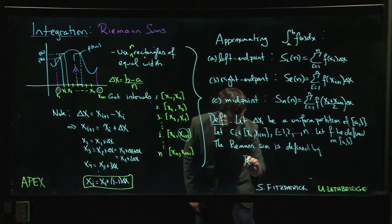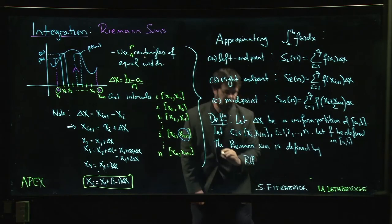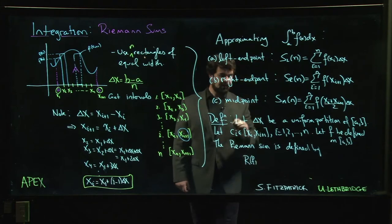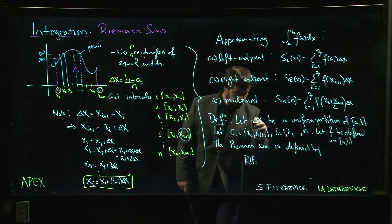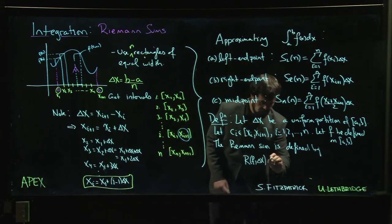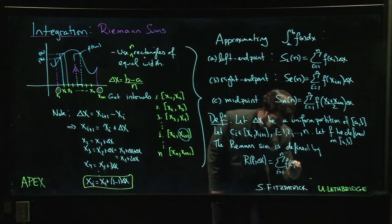So you'll see different notations for this. We might say R for Riemann, we might say F because we want to specify the function, we might say n for the number of intervals, or we might say delta x if we want to refer to the partition. And it's given simply by the sum i going from 1 to n, F of c_i times delta x.